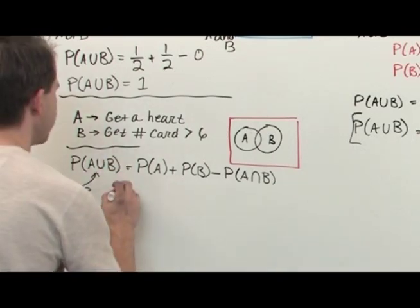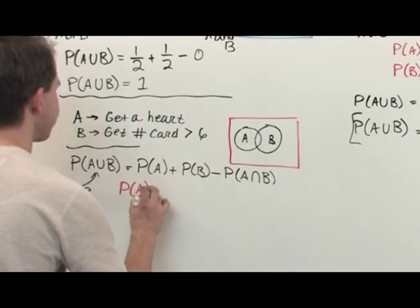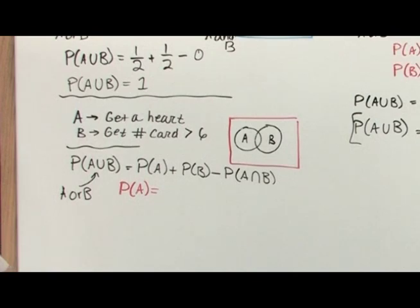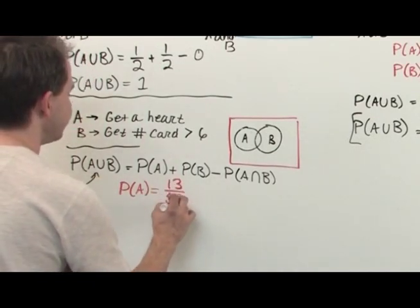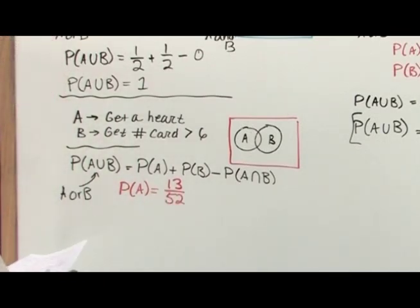What would be the probability of A? The probability of event A is pulling a heart from the deck. So how many hearts are in a deck of cards? There's 13 hearts in a deck of cards out of 52. So that's 13 out of 52.